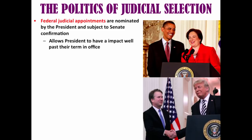Now, what are the politics of judicial selection? Federal judicial appointments are nominated by the president and subject to Senate confirmation. This is hugely important because it allows the president — whether Democrat or Republican — to have an impact well past their term in office. The reason for this is that federal judges serve for life unless they are impeached, which is extremely rare. Vacancies especially at the Supreme Court level are very few and far between — some presidents, like Jimmy Carter, never got to fill a seat, whereas Donald Trump and Barack Obama each filled two seats.